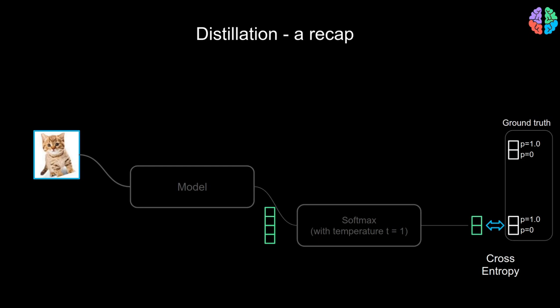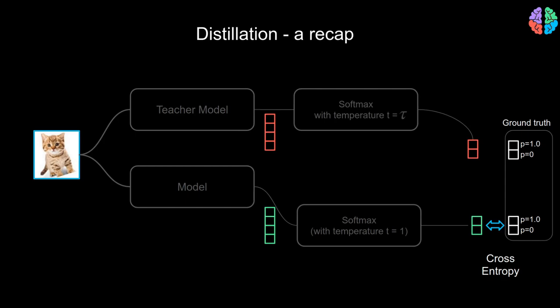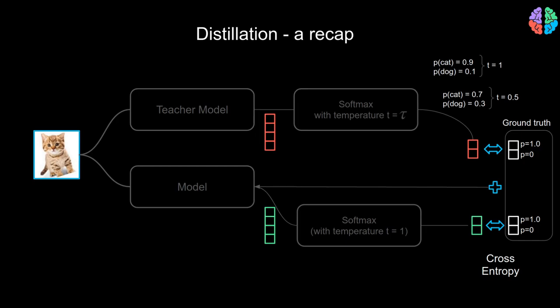We then compute a cross-entropy loss comparing with the ground truth labels and train the entire network. With Distillation, we distill knowledge from another network called the teacher network. We first get the embeddings from the teacher network and pass them through a softmax with a special temperature parameter tau to get output probabilities. The significance of temperature is to smoothen the output probabilities — for instance, if softmax says the probability of cat is 0.9, with temperature set to 0.5, it only says 0.7. We then compute a distillation loss between the teacher output and ground truth, summing it with the cross-entropy loss of our student model.